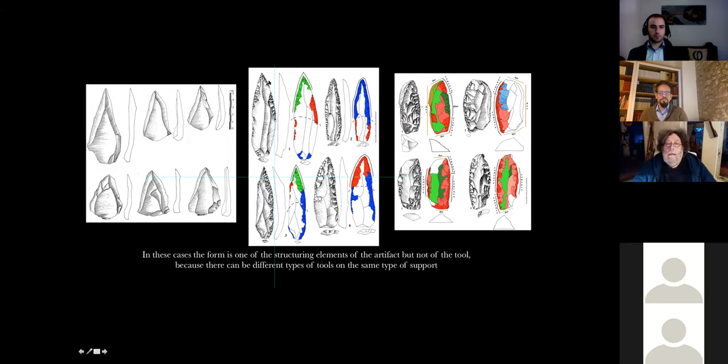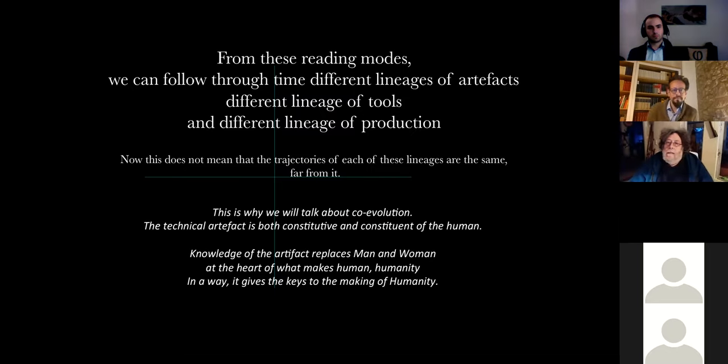All the artifacts are like that. We have another type of tools: elongated tools. And we have a convergence work. And here it's another type of tools. And you observe that if you use just the morphology, for you, you can categorize. And you can put the difference between the three slides. That is not the same. In this case, the form is one of the structuring elements of the artifact, but not of the tools. Because there can be different types of tools and the same types of support. From these reading modes, we can follow through time different lineages of artifacts, different lineages of tools, and different lineages of production.